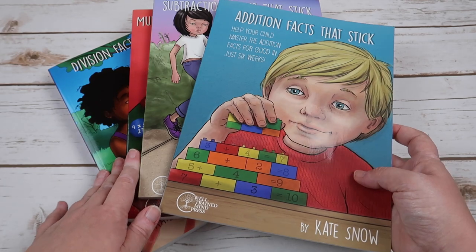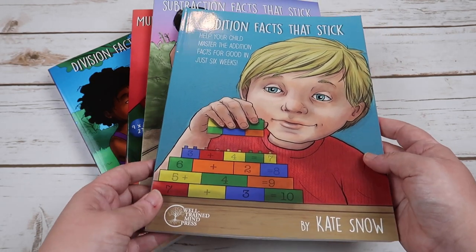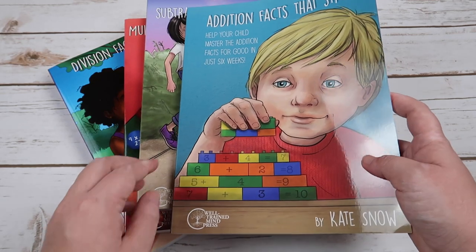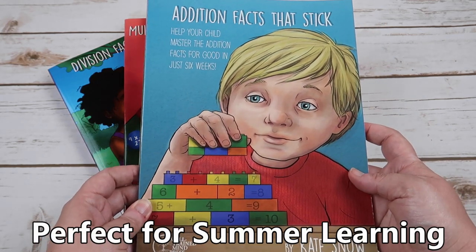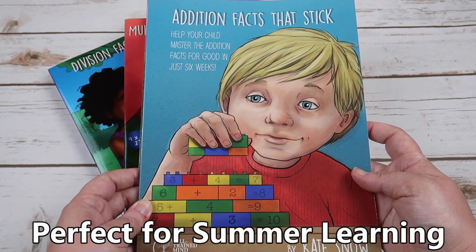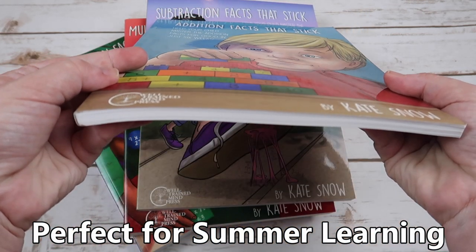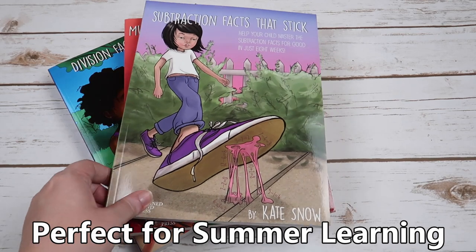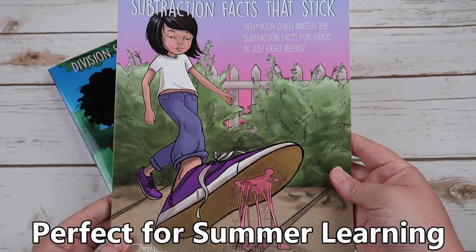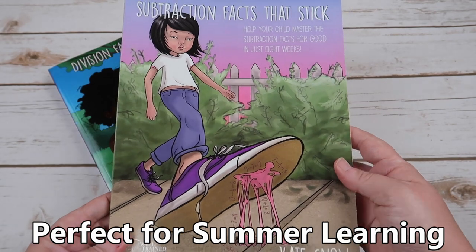We are going to look inside each of these today, but I also want to point out that each one has a different kind of time frame. So for the addition facts that stick, you're going to help your child master the addition facts for good in just 6 weeks. For the subtraction facts that stick, you're going to help your child master subtraction facts for good in just 8 weeks.